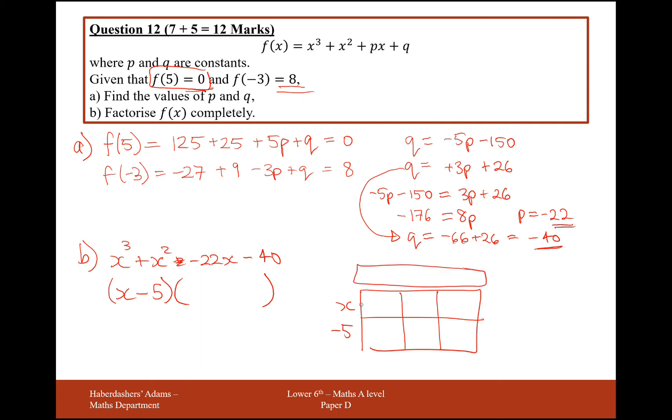So x times something will give me an x cubed we start off with first, so that's obviously going to be an x squared. Then I'll get minus 5x squared. If I expand out the bracket, you can see that if I was to put it there, I'd have minus 5x squared. But I don't want minus 5x squared, I want positive x squared, so I need to add back on 6x squared. So therefore, I'm going to have plus 6x.